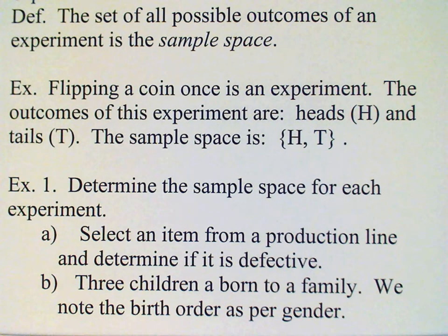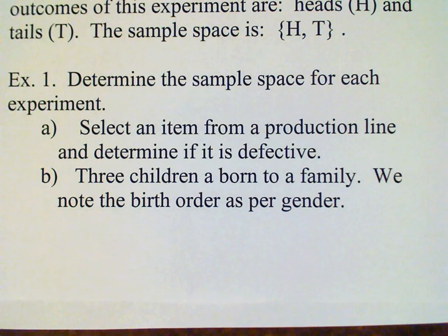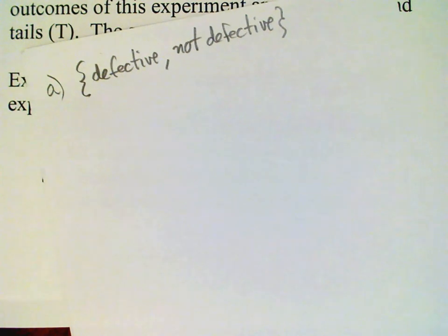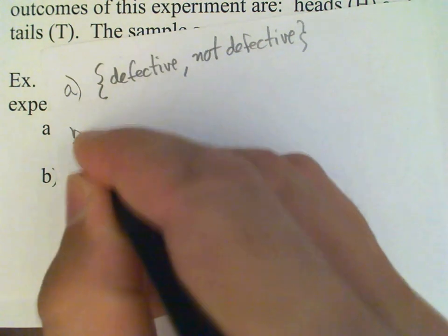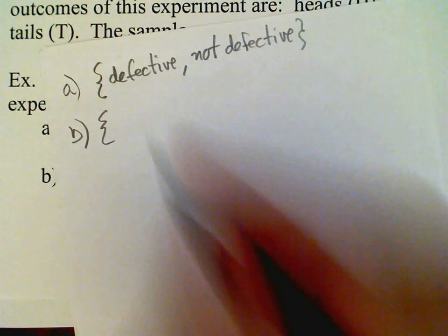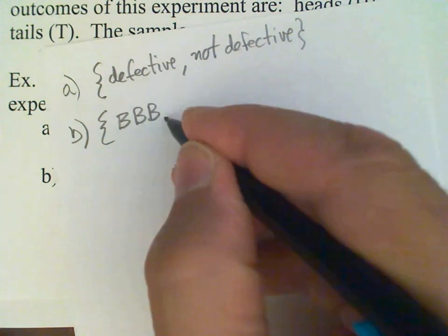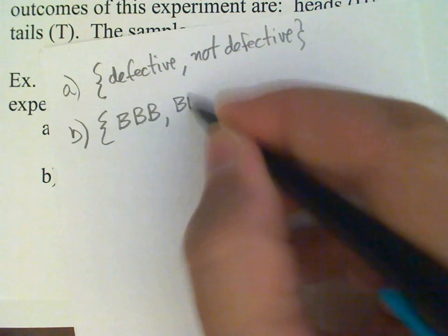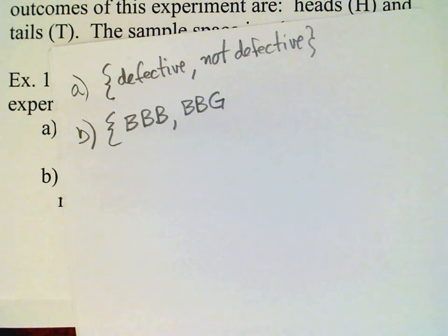Next item: three children are born to a family and we note the birth order with respect to gender. So for any given child, there are two possibilities—boy or girl. We could have all three boys, BBB, or you could have two boys and a girl. This will indicate that the eldest is a boy, then the middle child also a boy, and then the youngest is a girl.